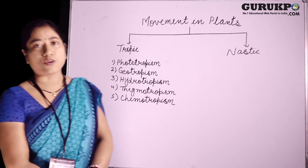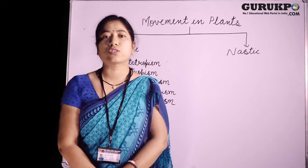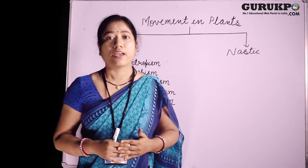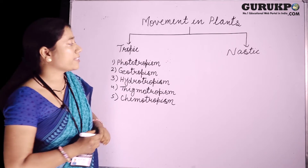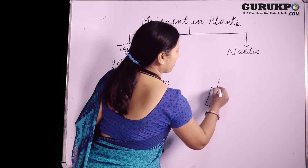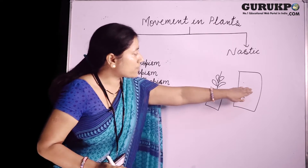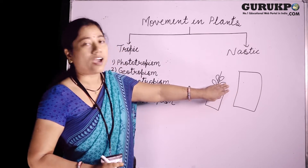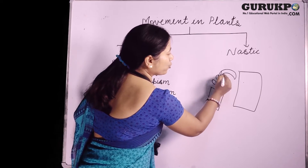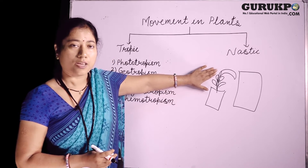First we take phototropism. Phototropism is the movement of a plant part in response to light. Root shows negative phototropism while shoot shows positive phototropism. We can understand this phenomenon by an example. We will take a potted plant and put it near a window. Through this window, light comes from a single direction. After some time, we will observe that the shoot of the plant will bend towards the source of light. Why does this happen?